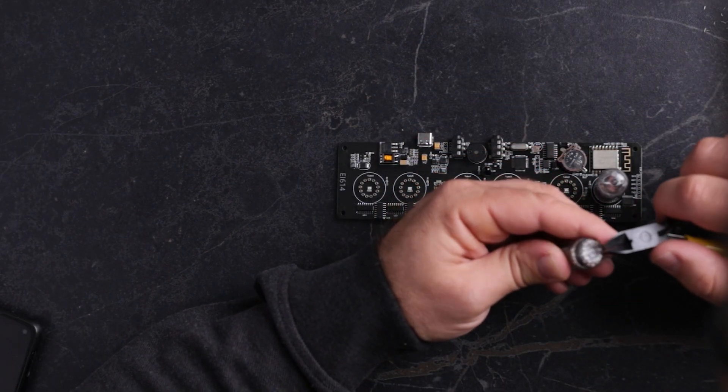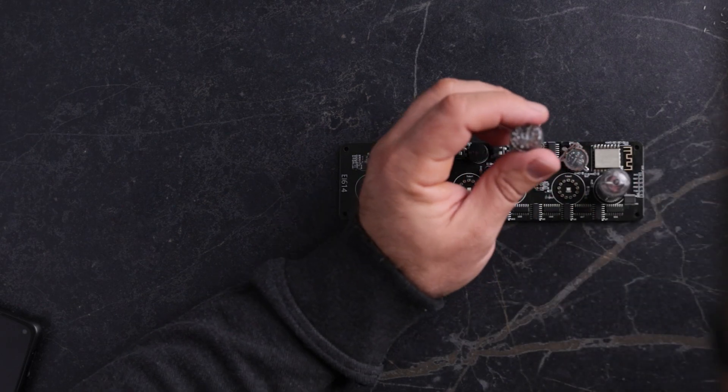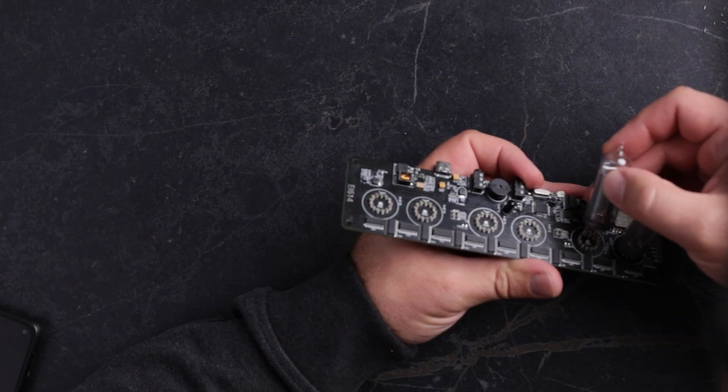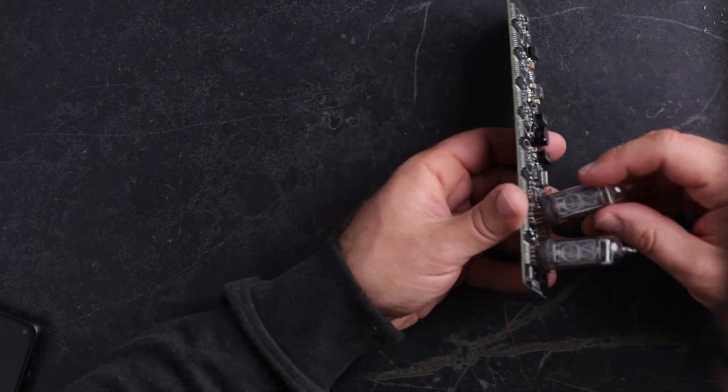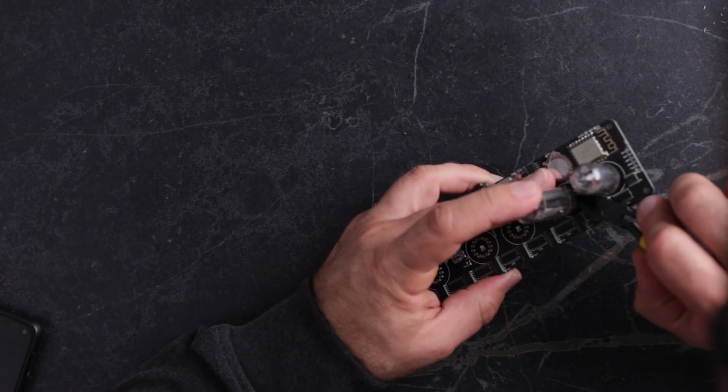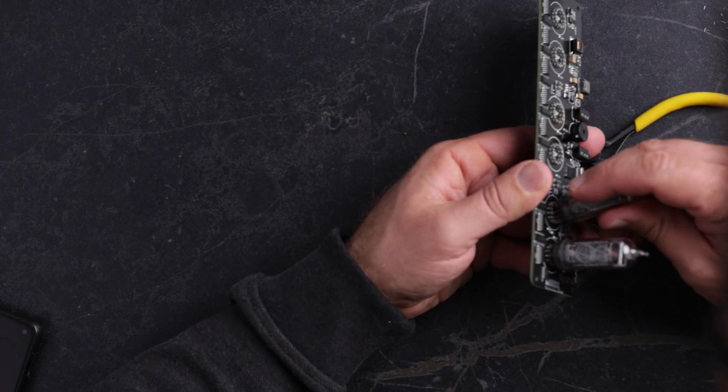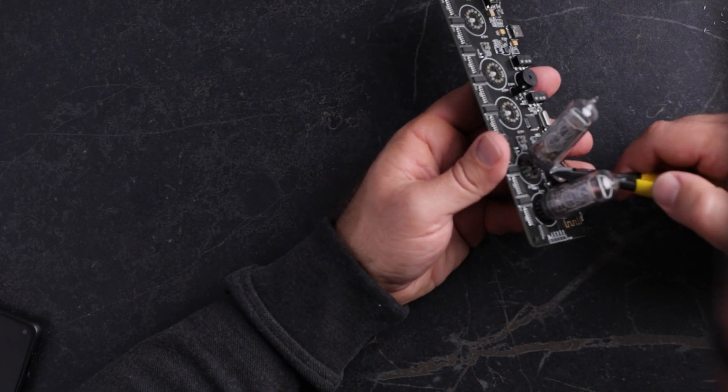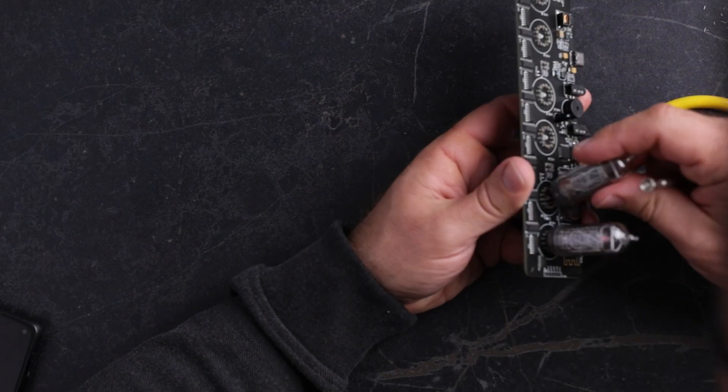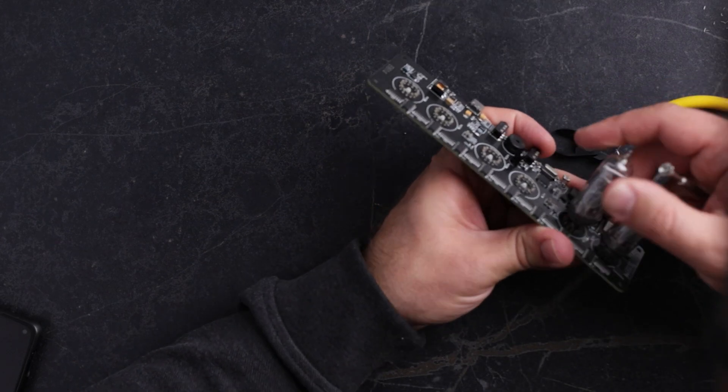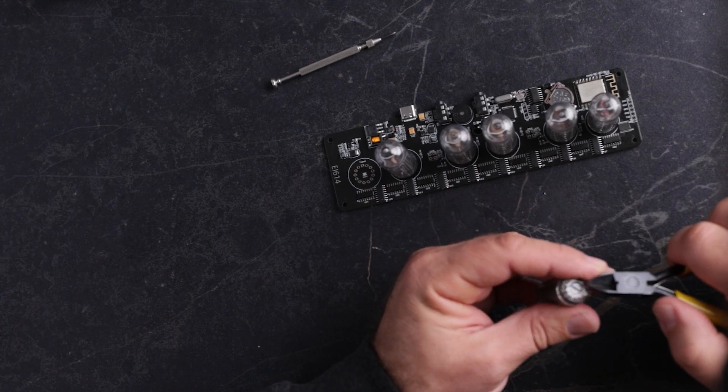Take the second tube, again positioning the wire with white insulation in the back. Install the tubes with nippers and a small screwdriver. All wires go into the slots and the second tube is ready. Now we install the last tube.